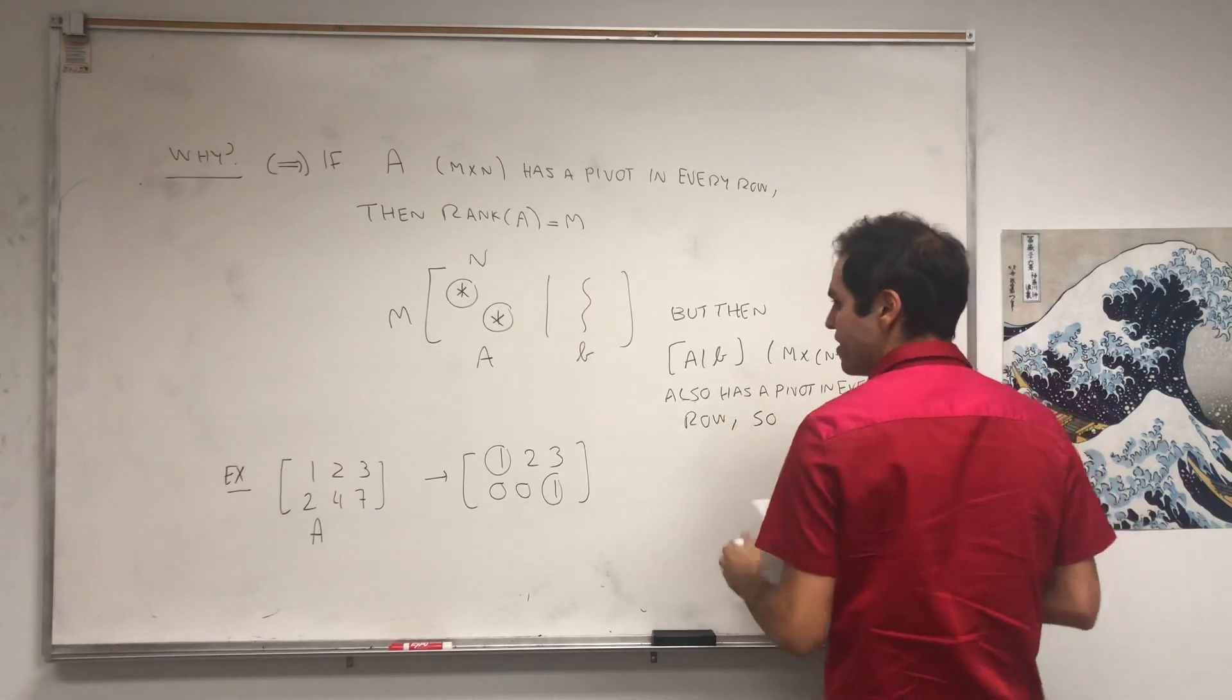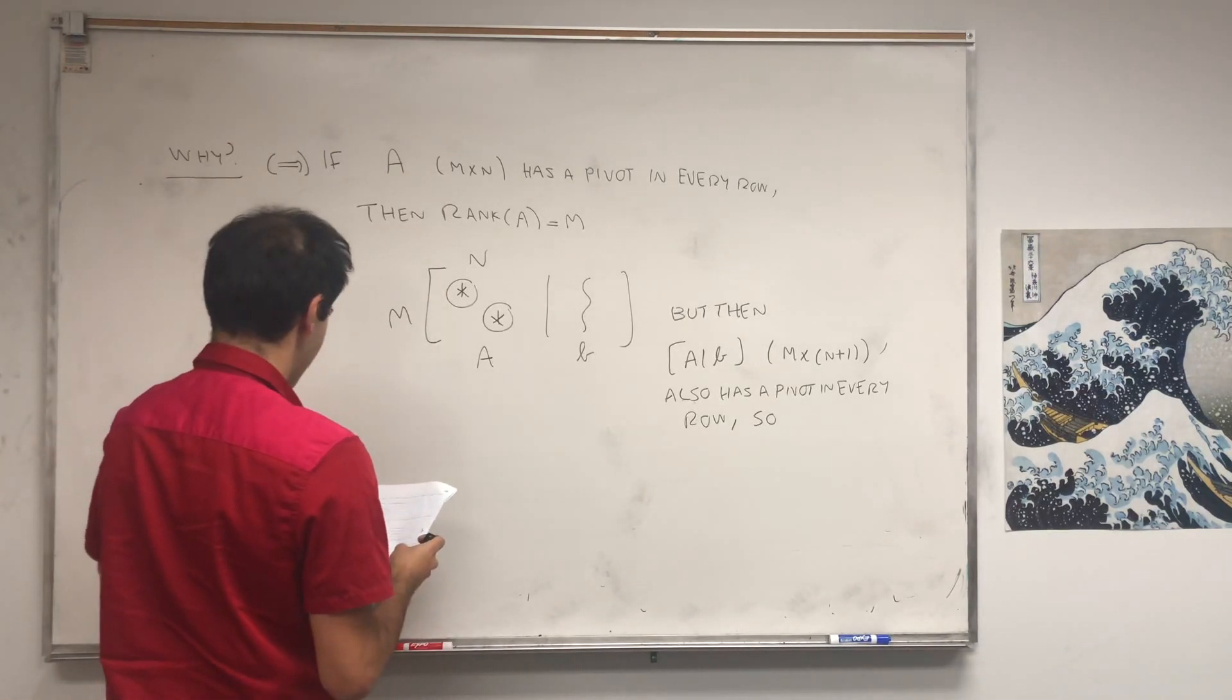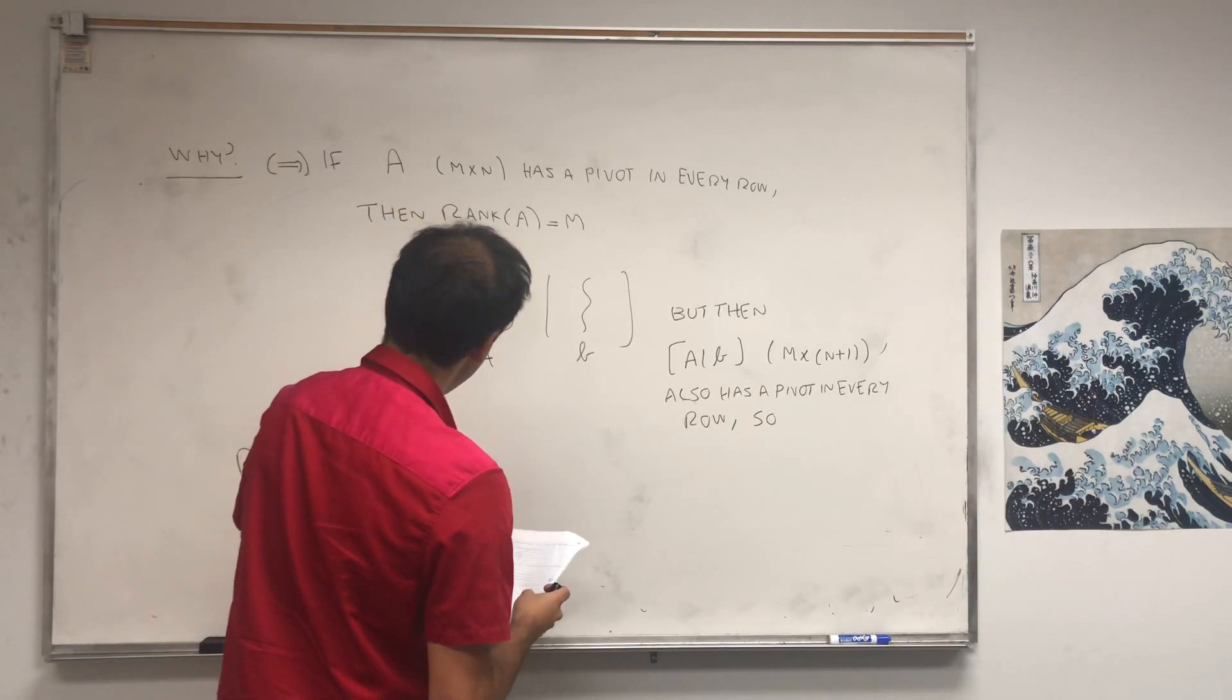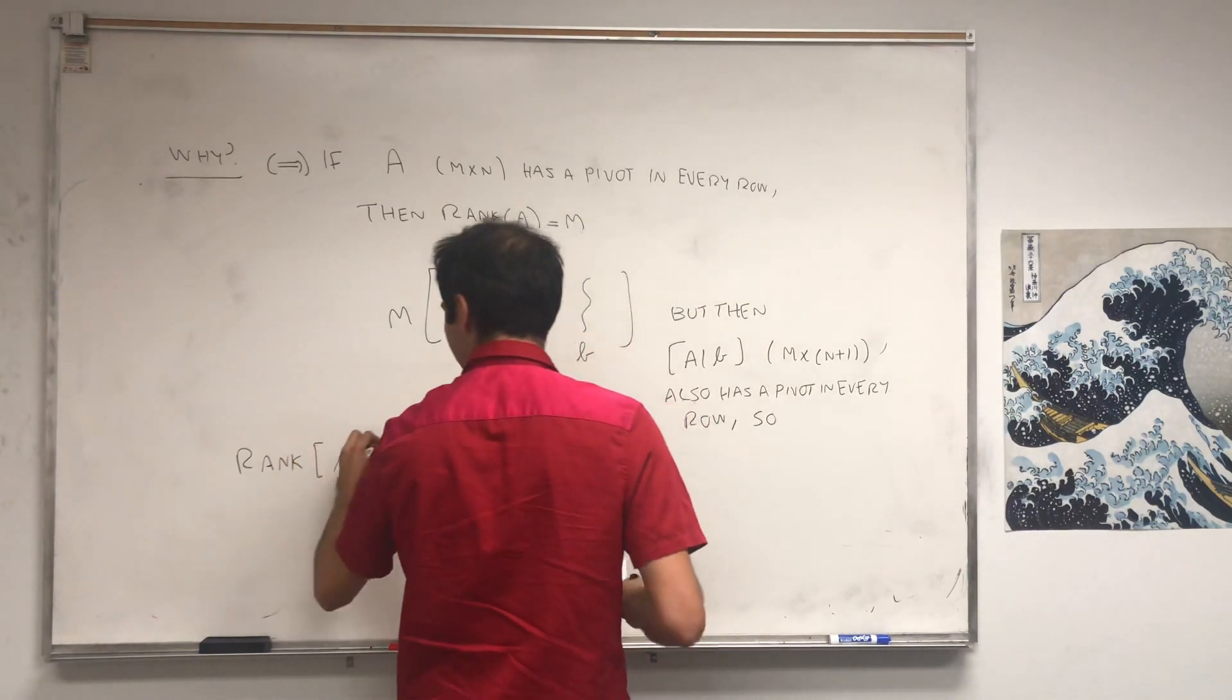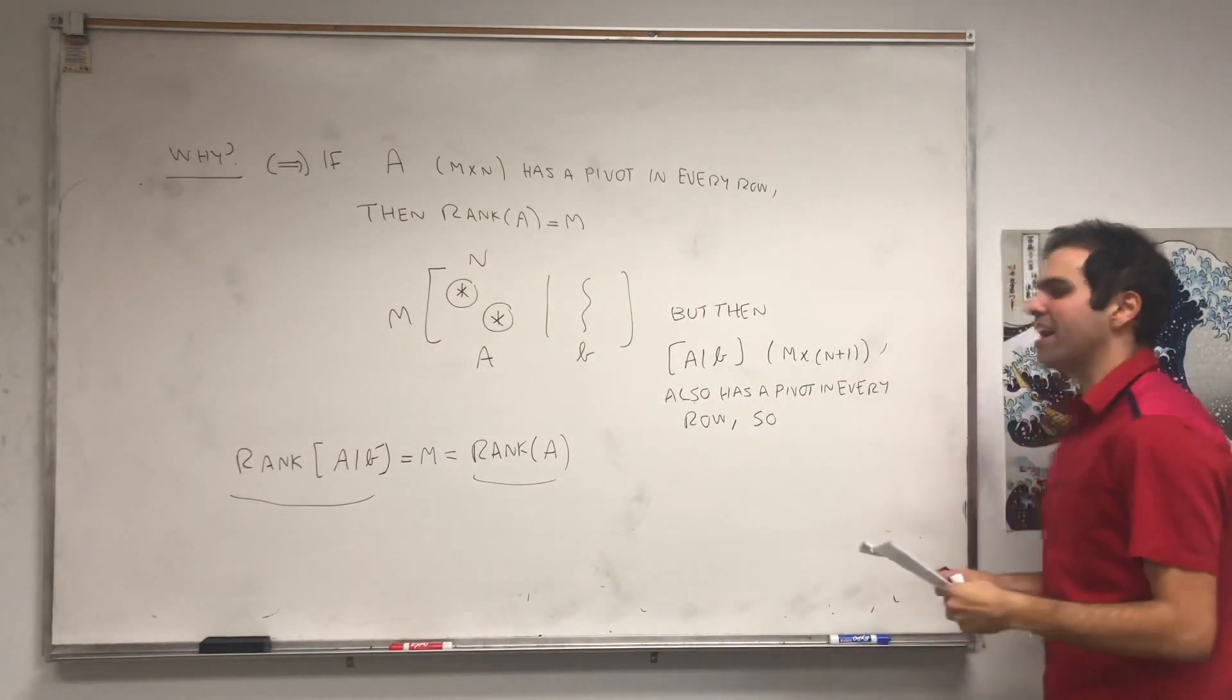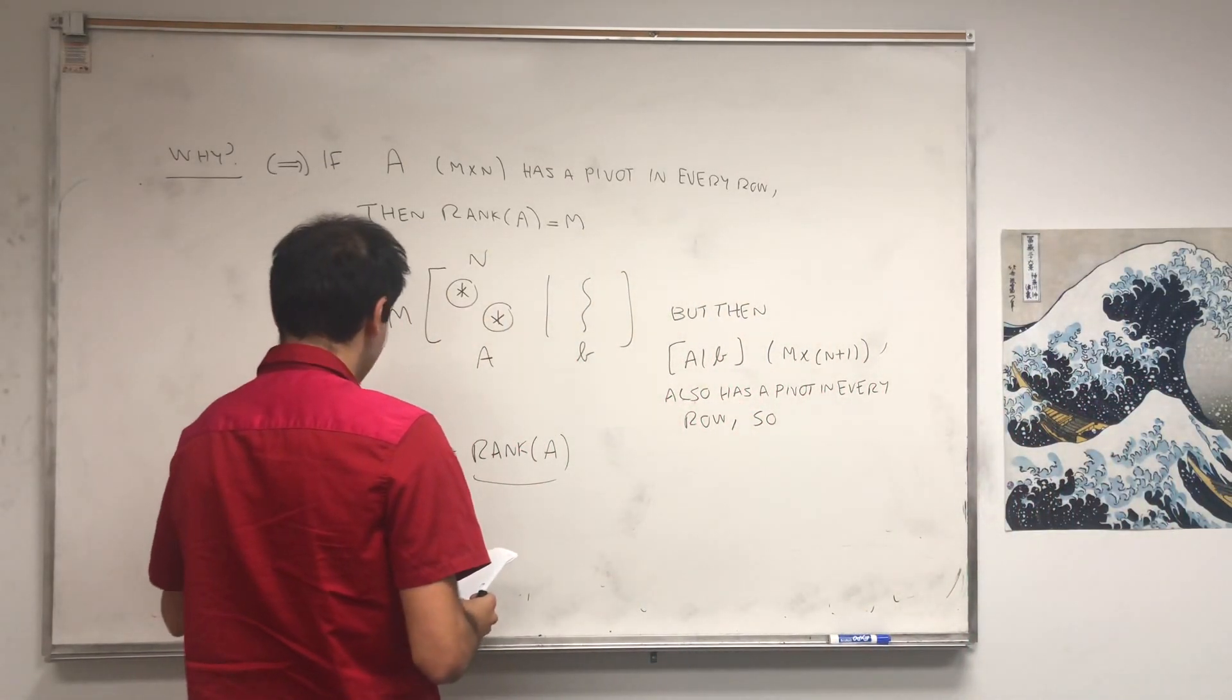So, in particular, the rank of this bigger matrix [A|B] is still M, and by definition, it's also the rank of A. Therefore, the rank of the augmented matrix is the rank of the original matrix, so by the rank criterion, we get that AX equals B is always consistent.